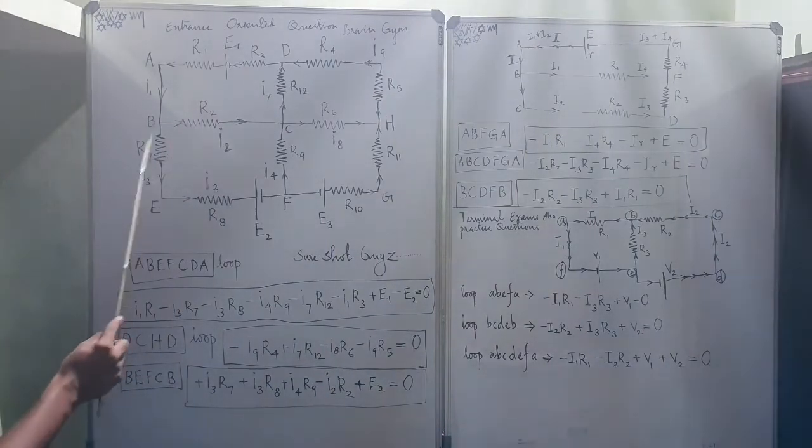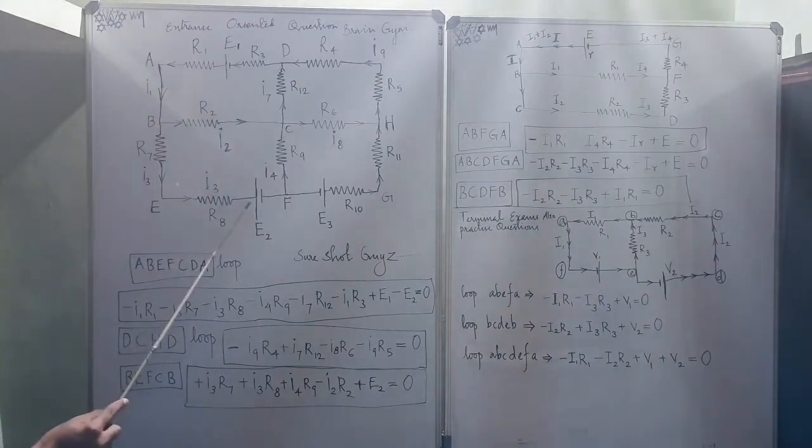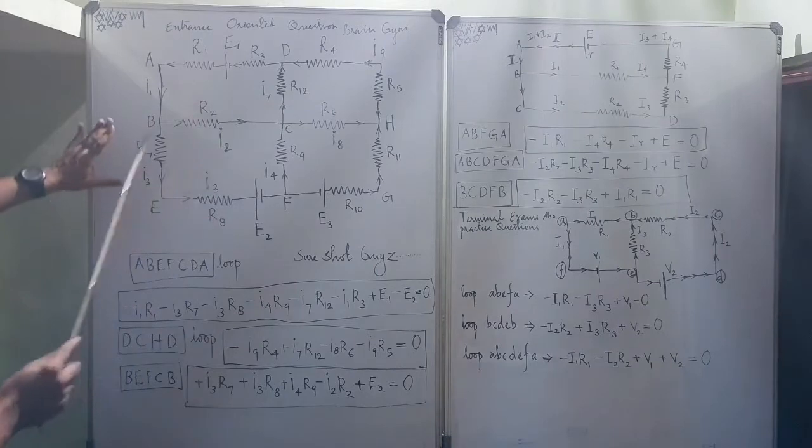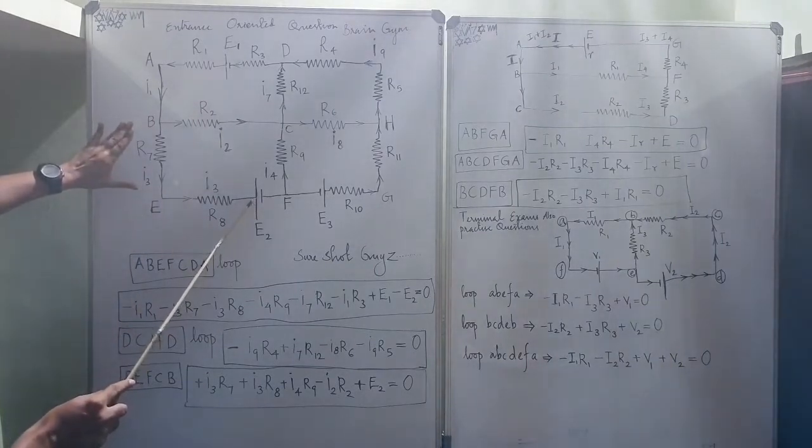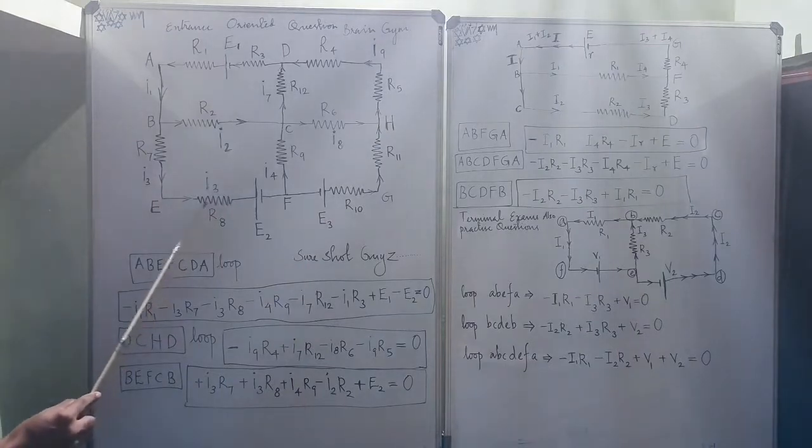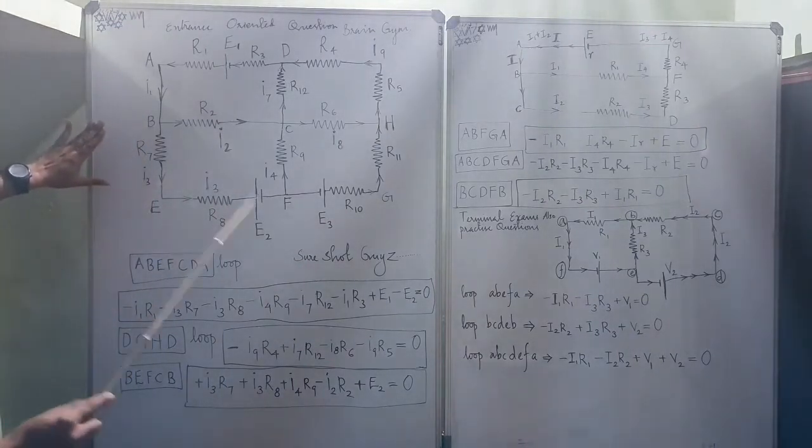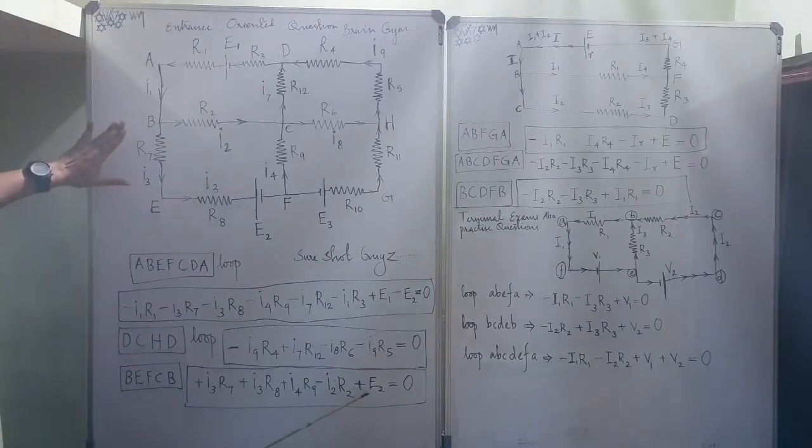Then, B-E-F-C-B. This thing. One cell is encountered over here. So, it is anticlockwise direction. But the direction should be from positive to negative. But starting from I3, B-E current. First of all, we will write the E2 over here plus E2.